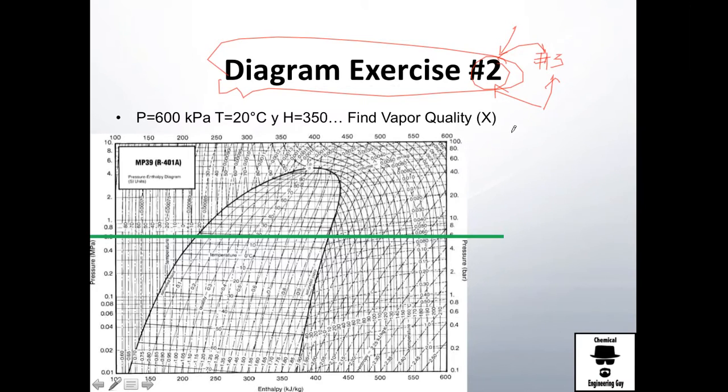First thing first, they will ask you to find vapor quality if it is given at these conditions: 600 kilopascals, 20 celsius, and this enthalpy value. Why this enthalpy value? Well, probably you will be wondering. With this enthalpy value you will characterize that mixture because